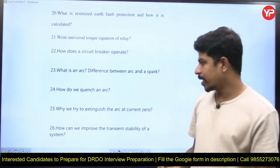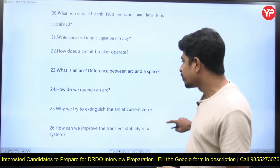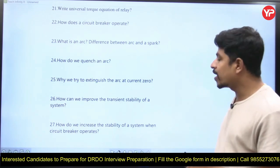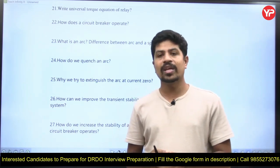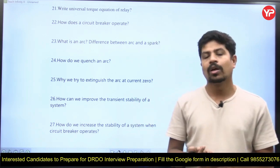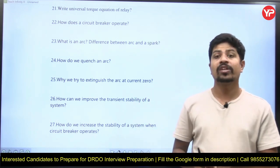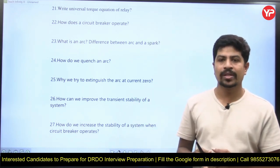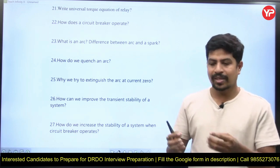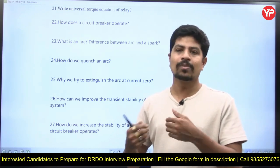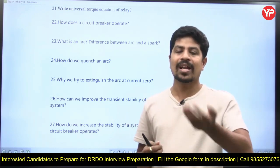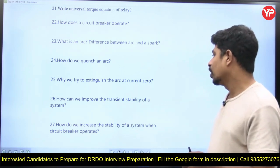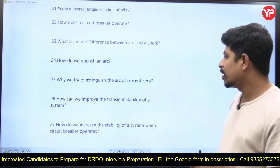How do you quench the arc? There are several methods depending on the type of circuit breaker. Why do we try to extinguish the arc at the current zero point? At the current zero point, the heat energy in the medium is less because heat energy is proportional to I²R, and when current I is zero, the heat energy is minimized — making it the optimal point to extinguish the arc.